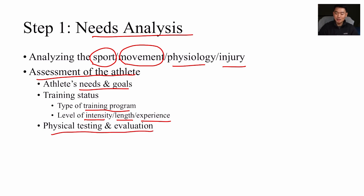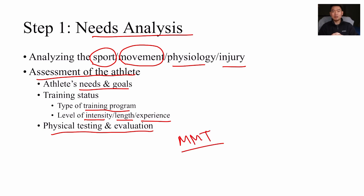You can use physical testing and evaluation when analyzing needs. For example, a manual muscle test is a great way to do a quick screen — to identify if this person is weak in a certain muscle or movement.